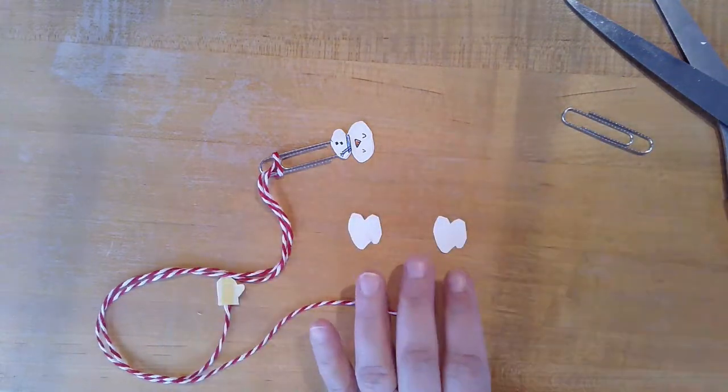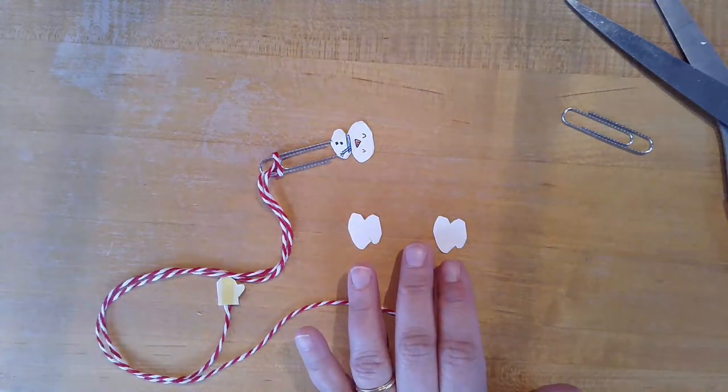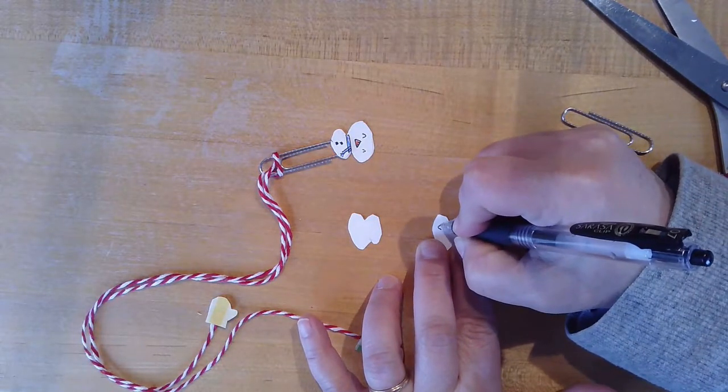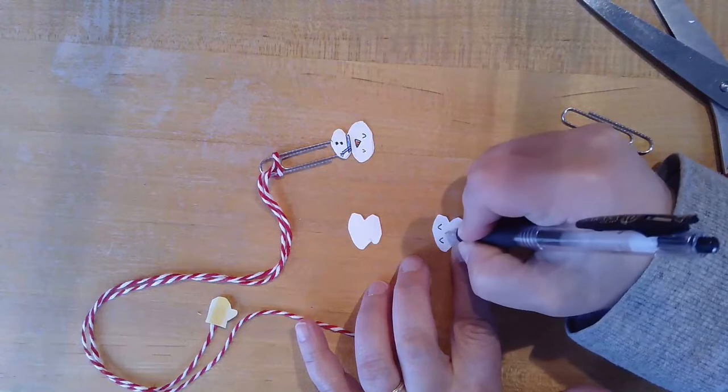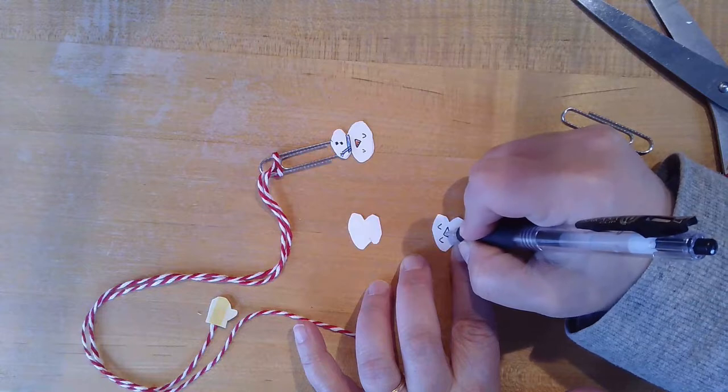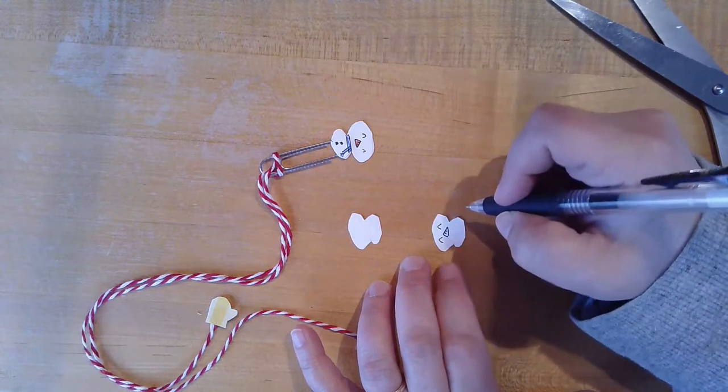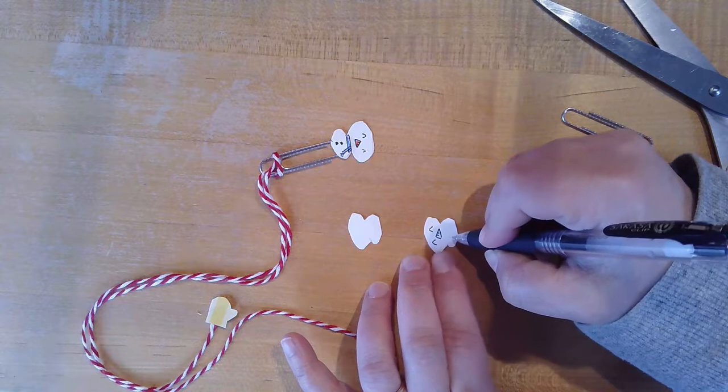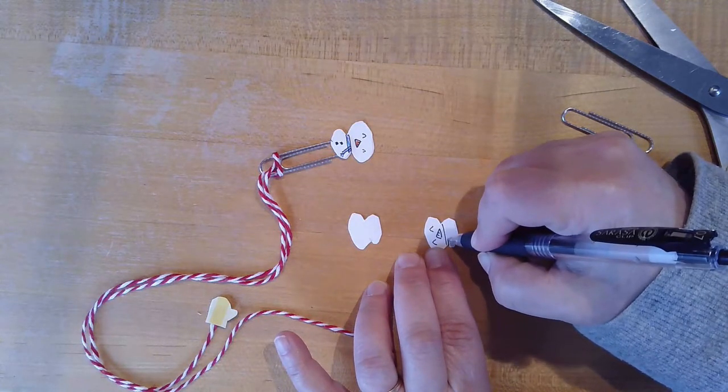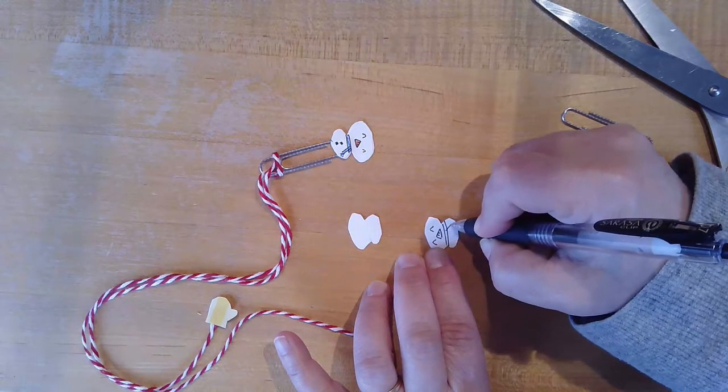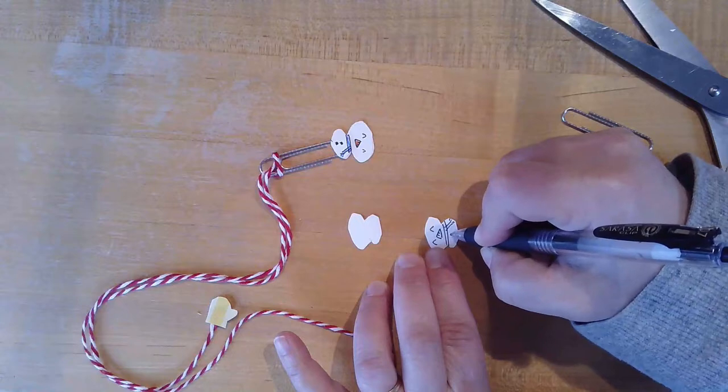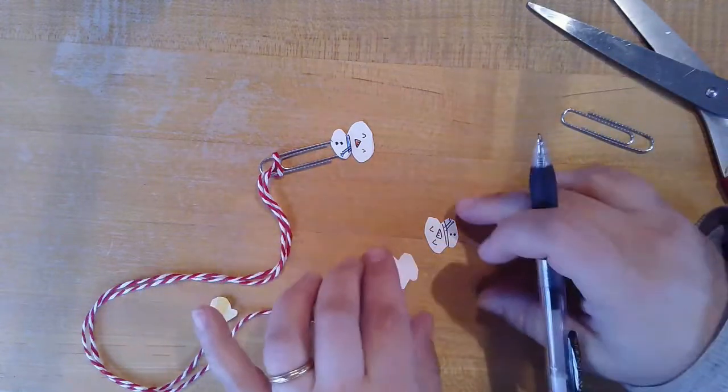Once you're satisfied with that, you can draw your snowman face. I'm using a black marker to draw the face and then I'm going to color in with the color pencils. And I'm going to add a scarf. It's just two black lines and then another little bit coming down off. And a couple of buttons. Perfect.